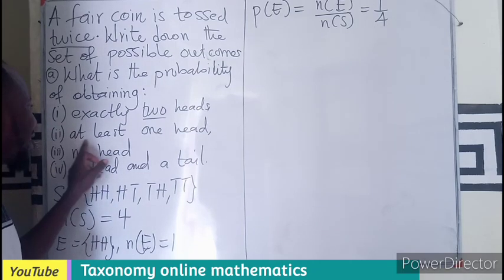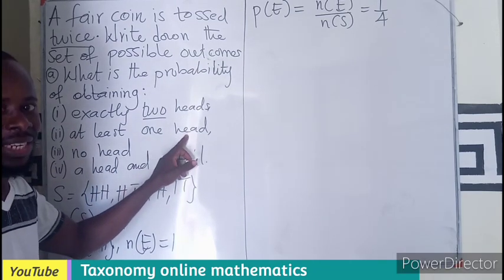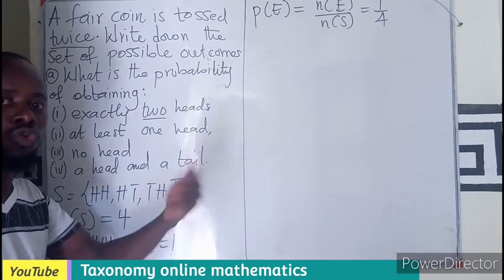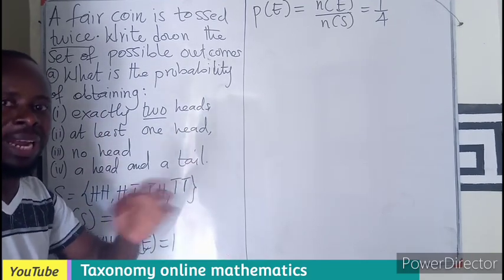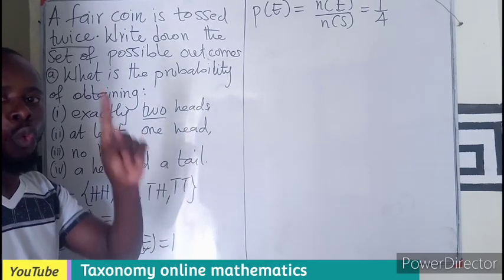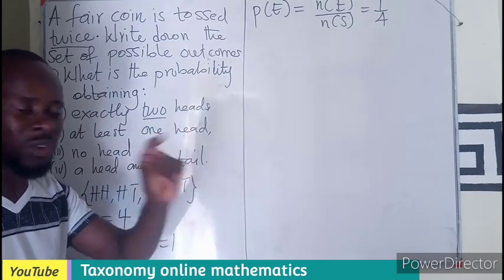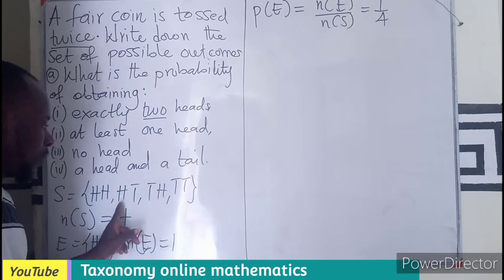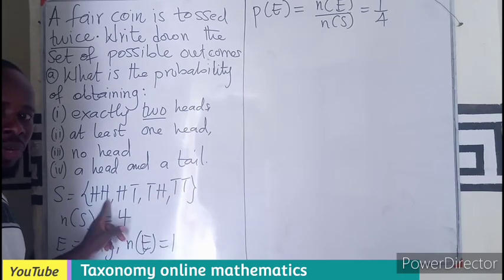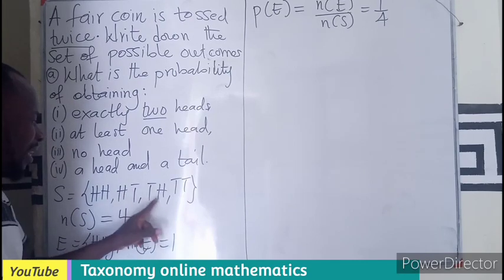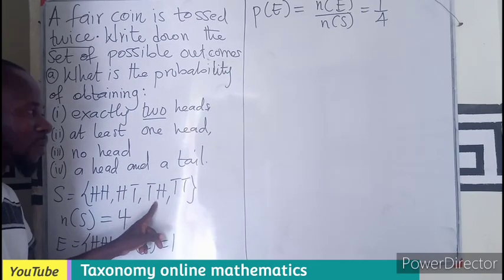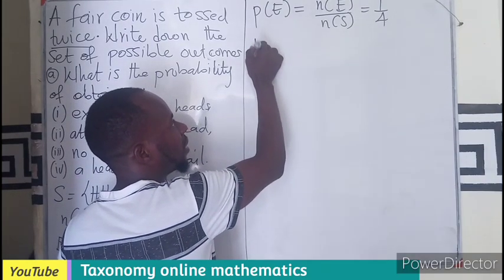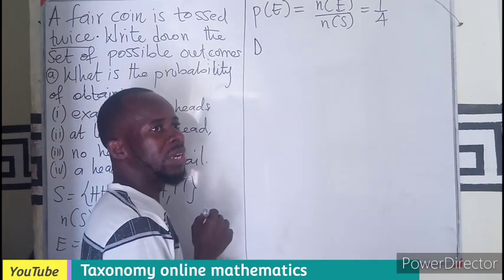Next, we find the probability of at least one head. 'At least one' means the minimum number of heads should be one — it could be one or two, but no fewer than one. Looking at our sample space: tail-tail has no head, head-tail has one head, tail-head has one head, and head-head has two heads.